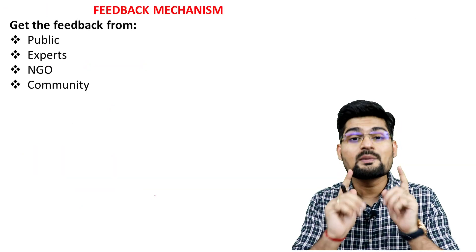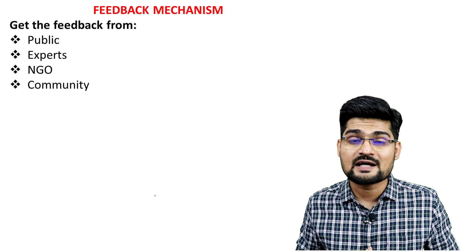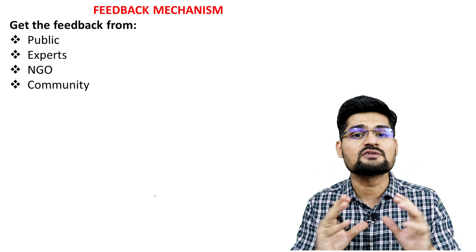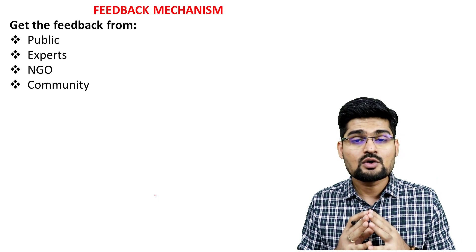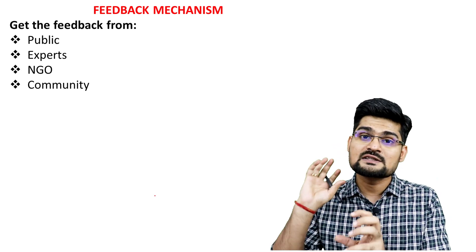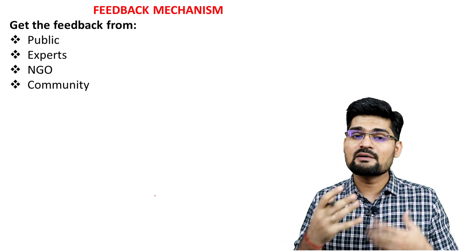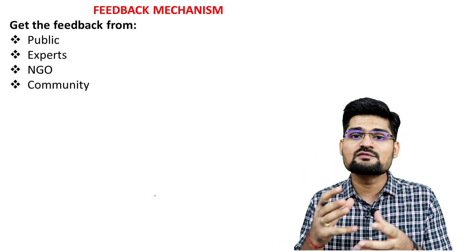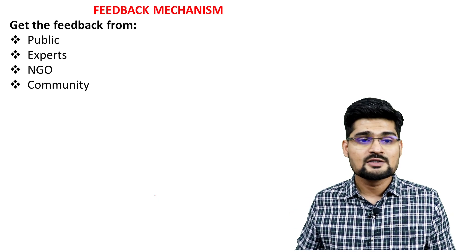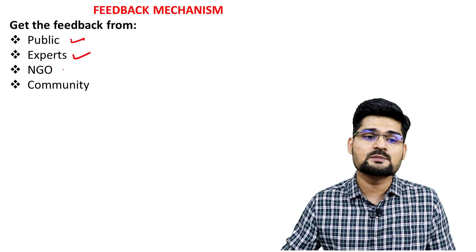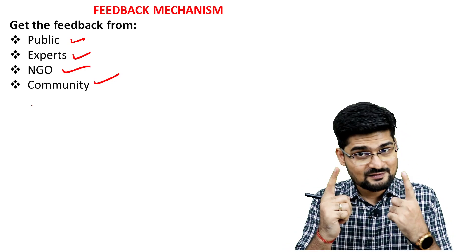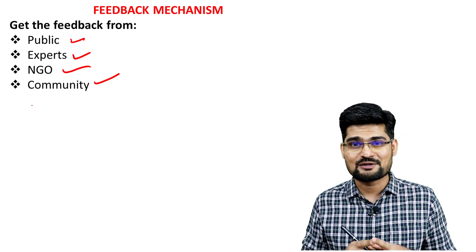Step nine is the feedback mechanism — a very important aspect of any plan. Remember, no plan is perfect. The feedback mechanism checks whether the plan is working as objectified: if the objective is to fulfill the needs of people and it is not doing so, we need feedback from the public, experts, NGOs, and communities, and then rework the plan. That is a very important part of strategy in regional development.